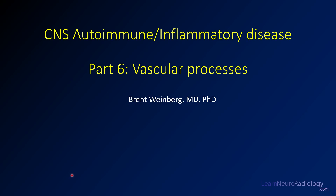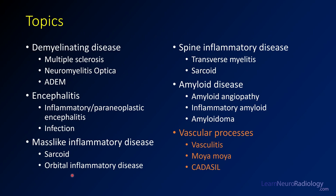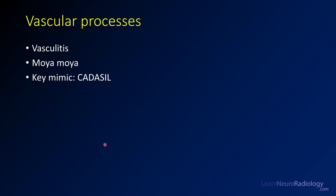Welcome back to Learn Your Radiology. I'm Brett Weinberg. This is the sixth and final portion of our autoimmune and inflammatory disease series. For this lecture, we're going to talk about vascular processes within the brain. We've covered a number of other topics in these lectures, ranging from demyelinating disease all the way through amyloid disease. Today we're going to focus on three vascular processes: vasculitis, Moyamoya, and CADASIL.